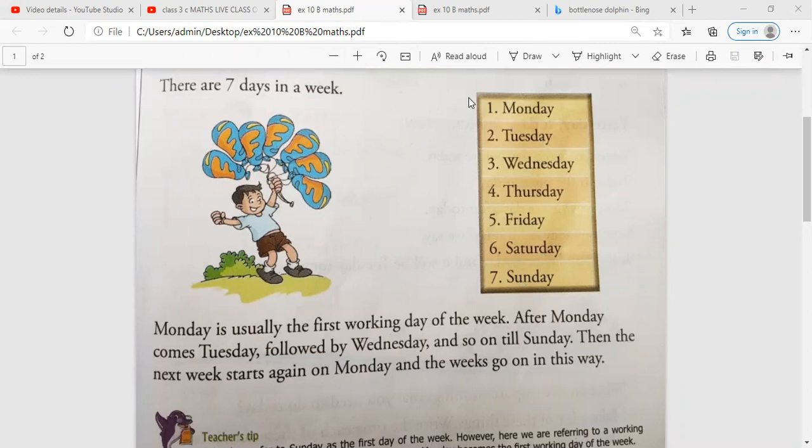Then the next week starts again on Monday and the weeks go on in this way. So your week starts on Monday, ends on Sunday, then another week will start with Monday. So this is the week and you have seven days in that.